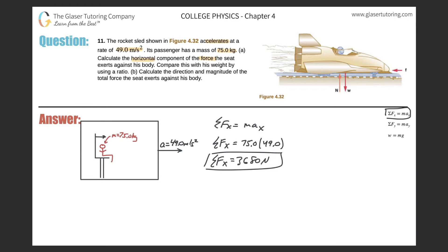Then it says compare this with his weight by using a ratio. Remember the weight formula over here on the right-hand side is w equals mg. So to find his weight, we need to take his mass of 75.0 kilograms and multiply it by gravity, 9.80.